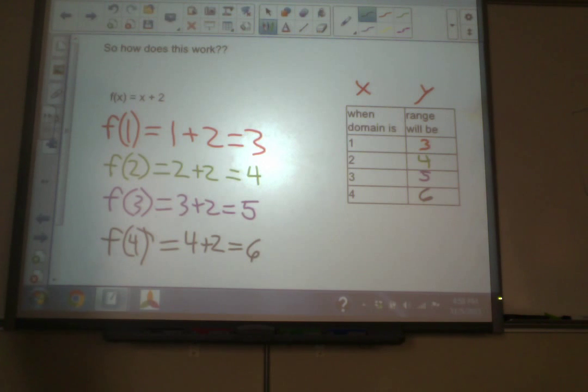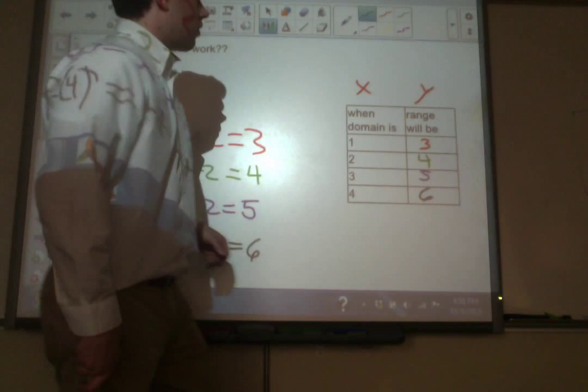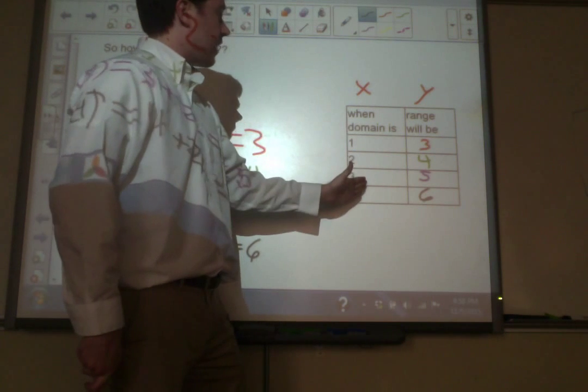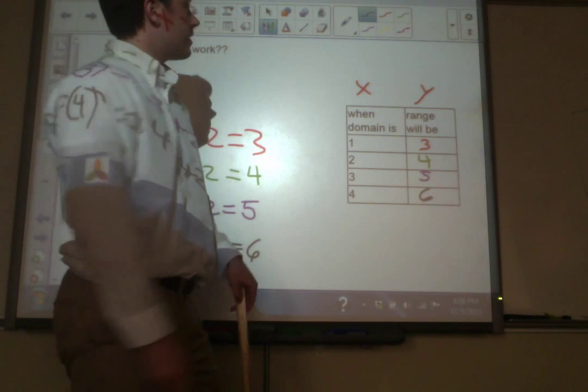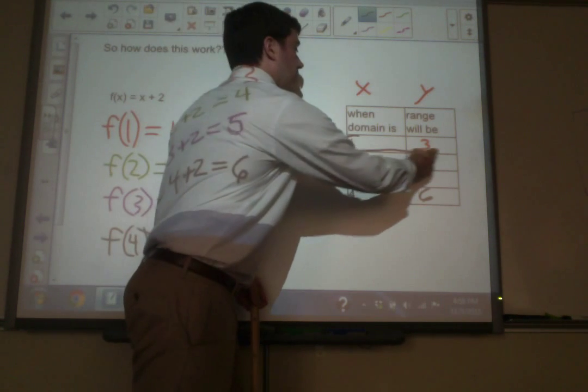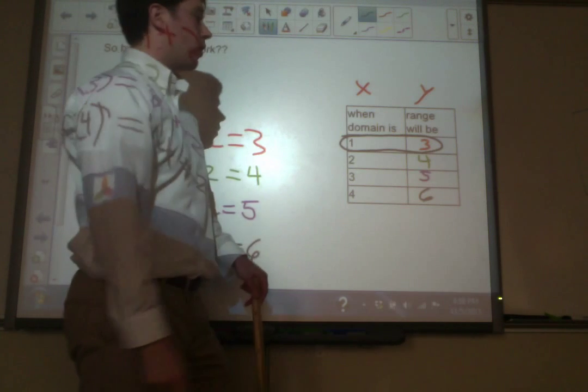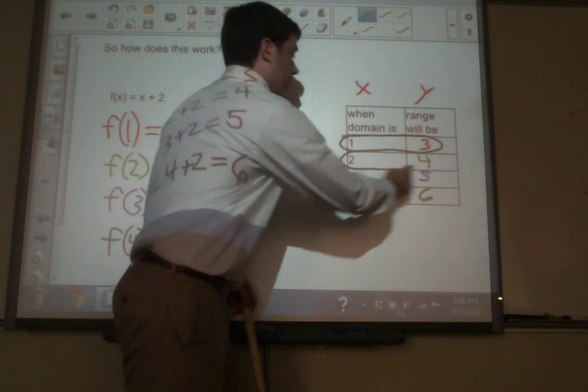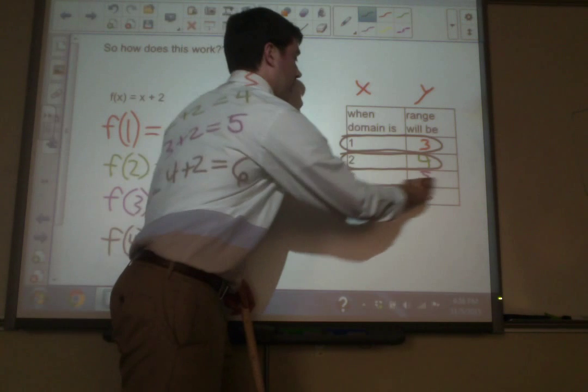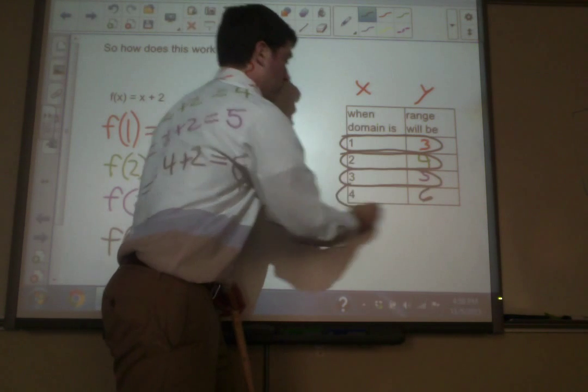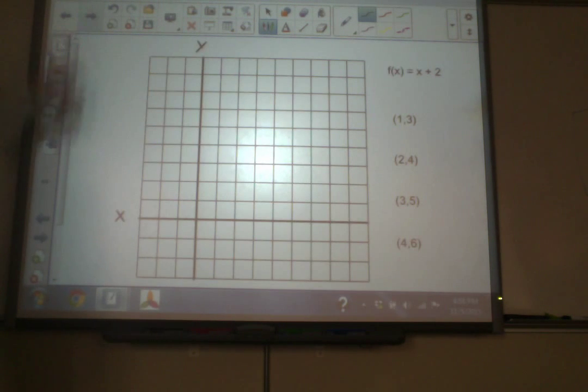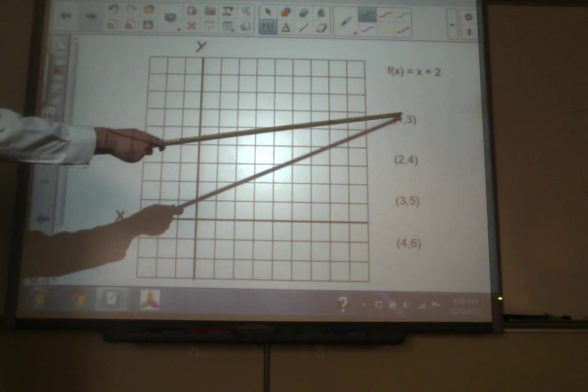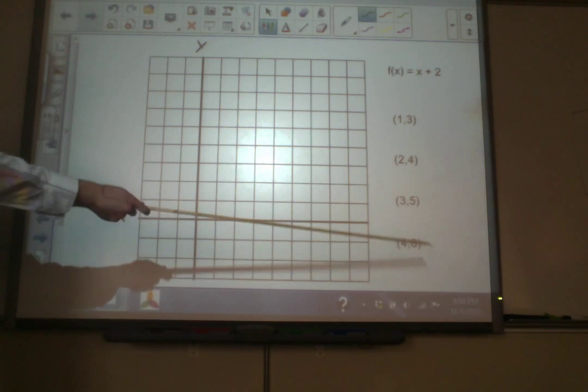Remember, I started this lesson by reviewing graphing. So, where does graphing come into this? Well, look at our chart here. We've got four different x values domains and four different y values. We can basically take each one of these and treat it like a point on a graph. The first one being (1,3). The second one being (2,4). The third one being (3,5). And the fourth one being (4,6). Just like this. 1, 3, 2, 4, 3, 5, 4, 6.